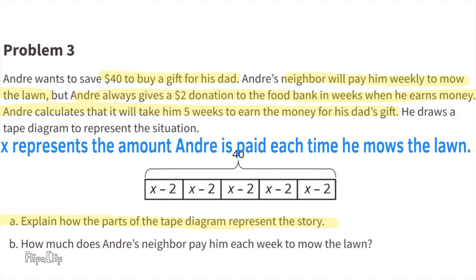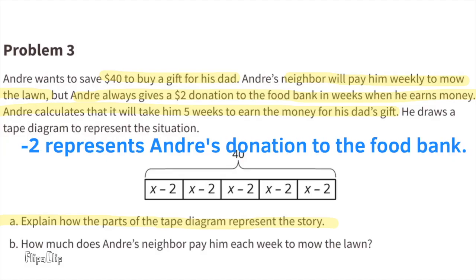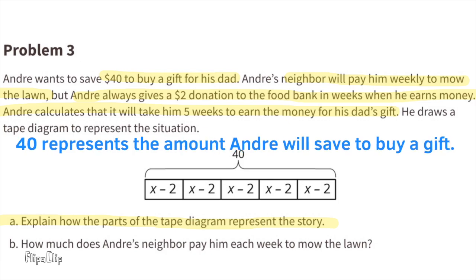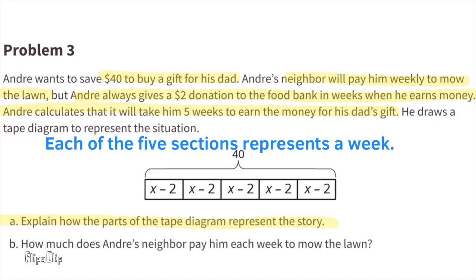Part A: explain how the parts of the tape diagram represent the story. X represents the amount Andre is paid each time he mows the lawn. Negative two or minus two represents Andre's donation to the food bank. 40 represents the amount Andre will save to buy a gift. Each of the five sections represents a week.